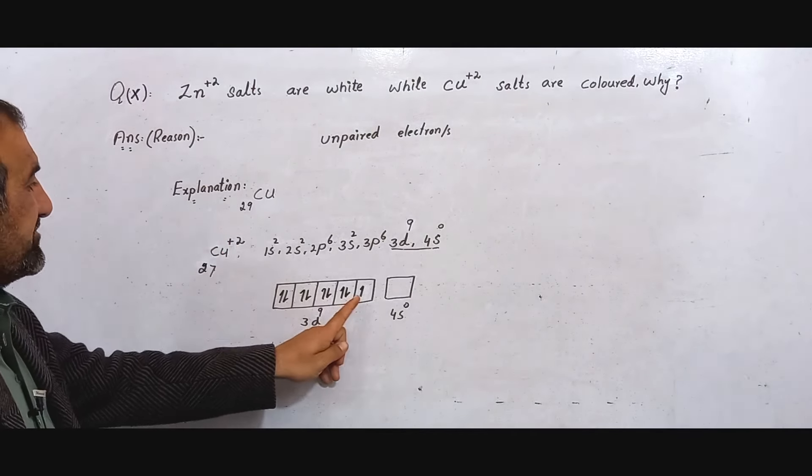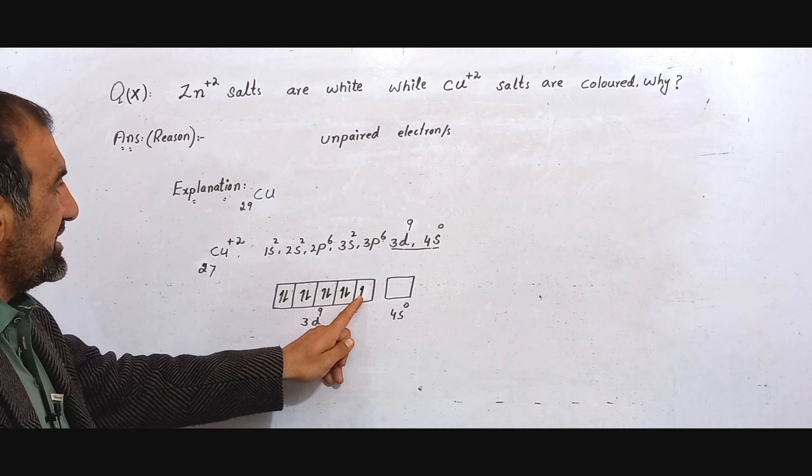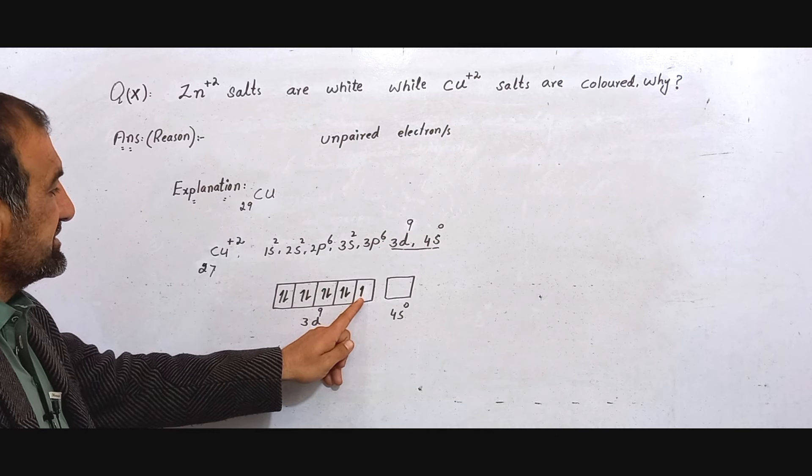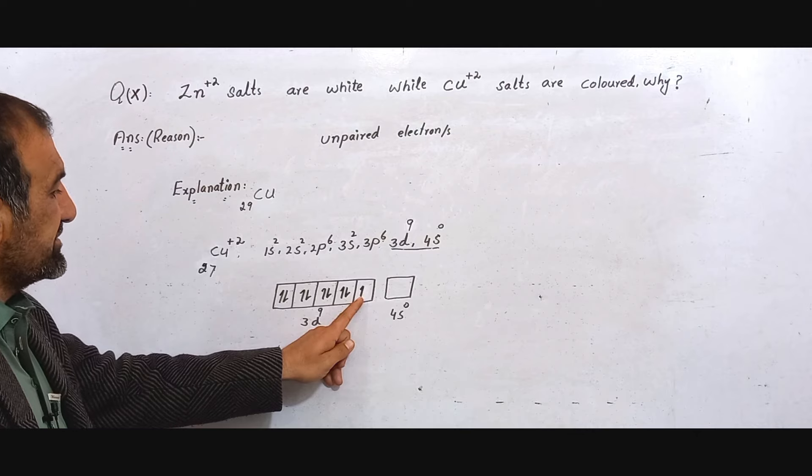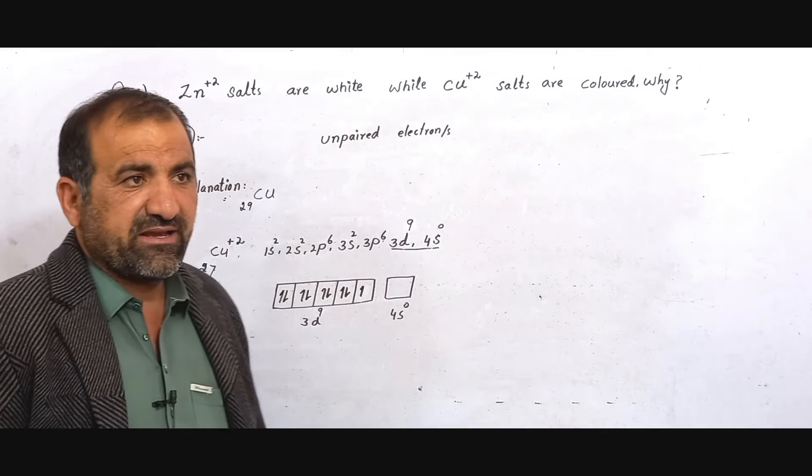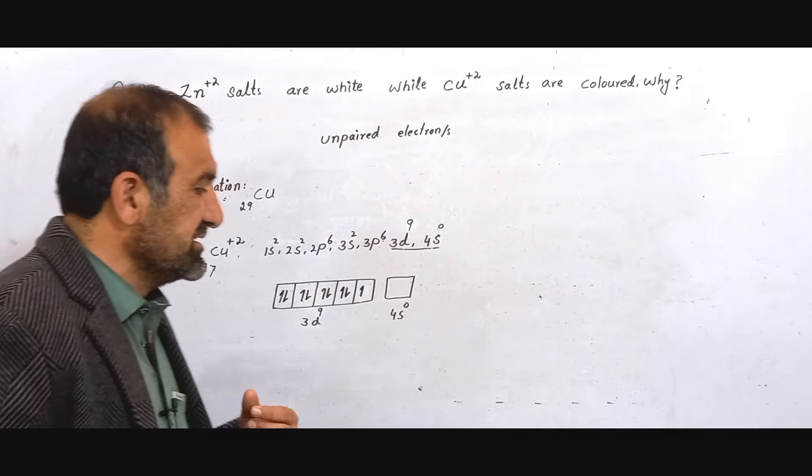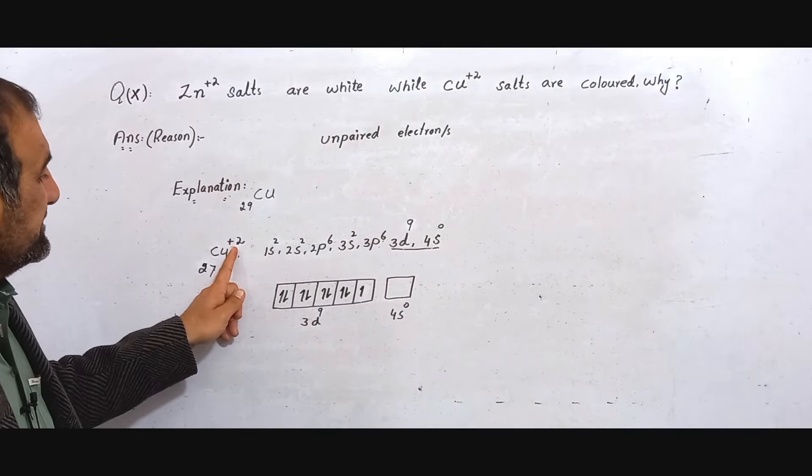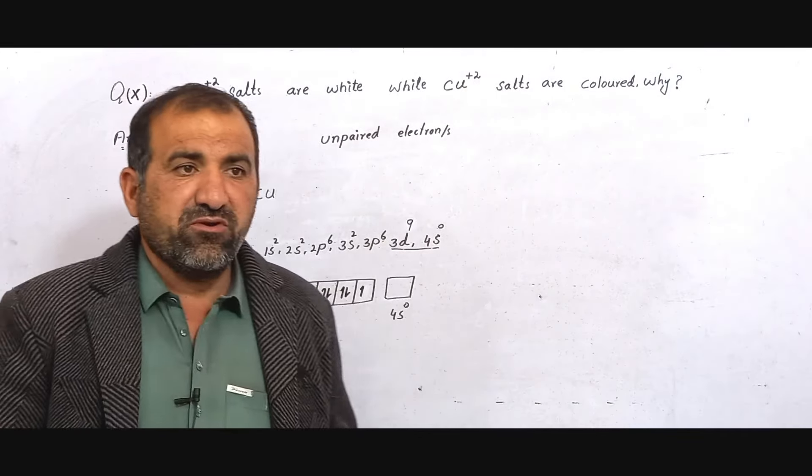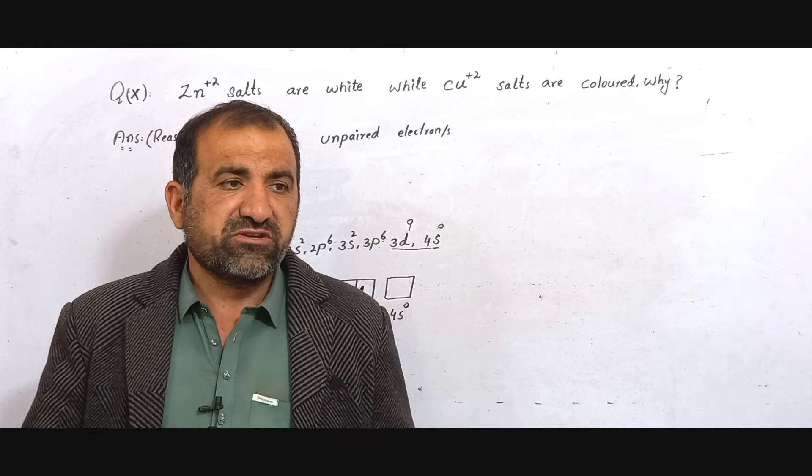Here Cu²⁺ has one unpaired electron in the d orbital or sub-shell. So when visible light falls on it, it will absorb yellow color and emit or transmit blue color as complementary color. Thus Cu²⁺ appears blue in color to our eyes. This is the difference: Zn²⁺ has no unpaired electrons so it forms colorless white compounds.